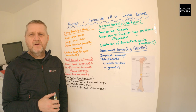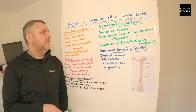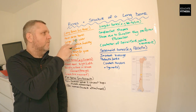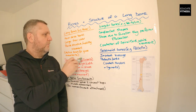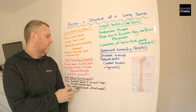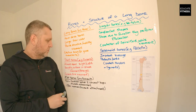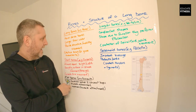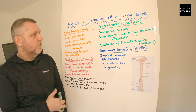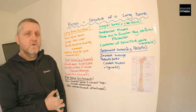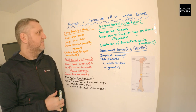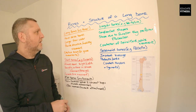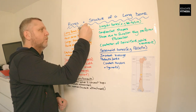Today we're going to go through the different types. We've got long bones, irregular bones, sesamoid bones, short bones, and flat bones. Let's go through each one individually, starting with long bones.